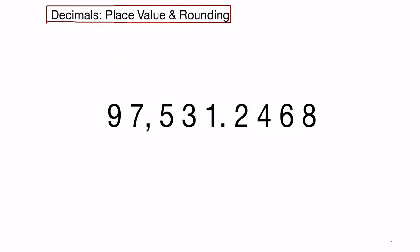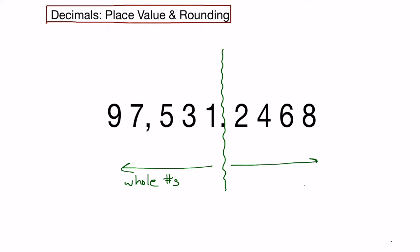Welcome. To start our investigation of place value and rounding in decimals, let's bring in a decimal number. The decimal is represented by a dot, and you can think of the dot or decimal as a separator between whole numbers on the left and parts of whole numbers on the right.